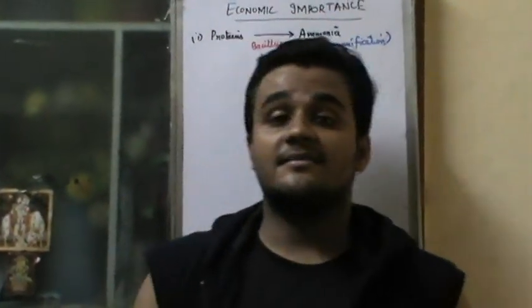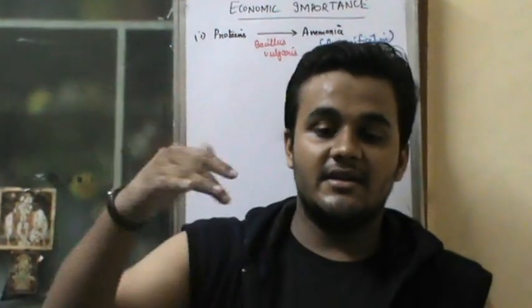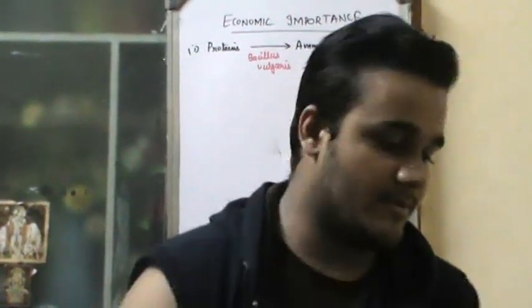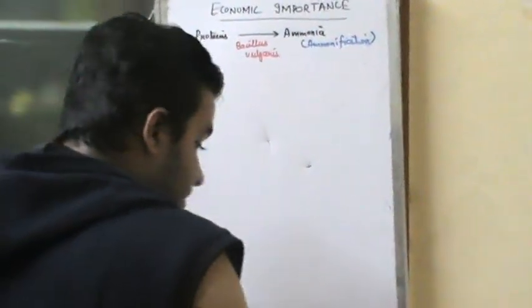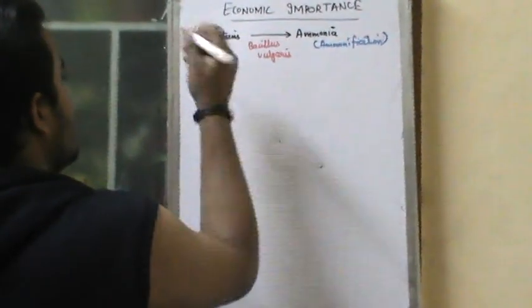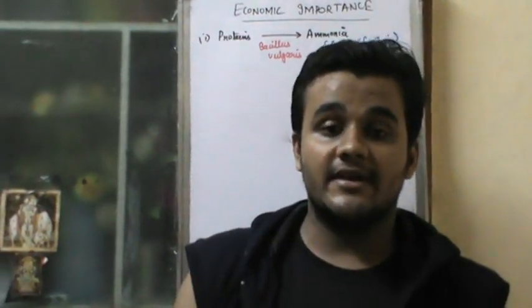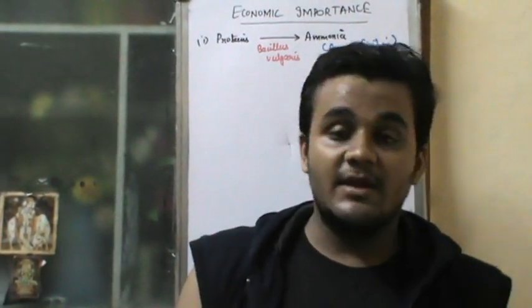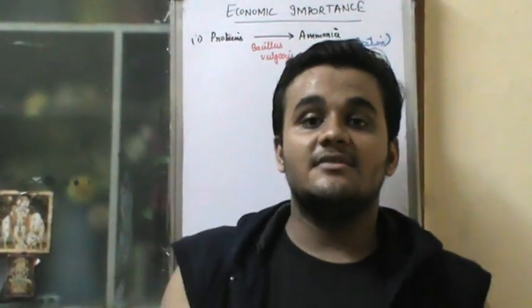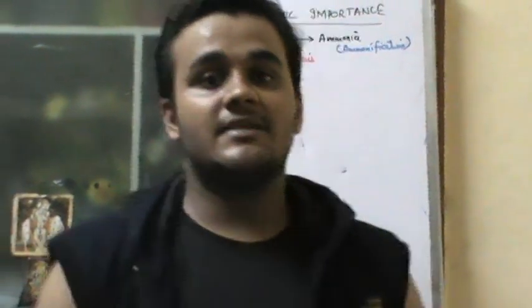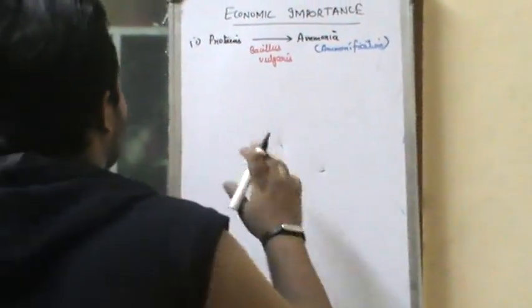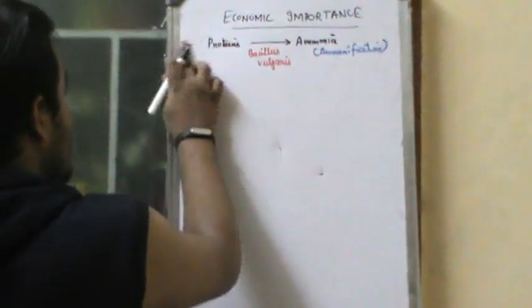As I mentioned in my previous video, chemosynthetic autotrophs are involved in nitrification: ammonia to nitrite is done by Nitrosomonas and then Nitrobacter. For dairy products — again as mentioned — there is a particular heterotrophic bacteria; milk is converted into curd by Streptococcus lactis or Lactobacillus.